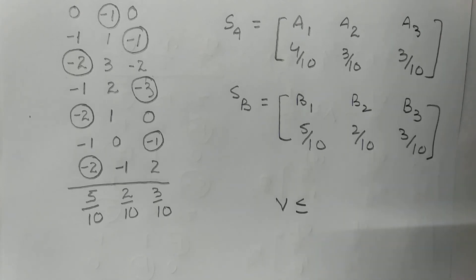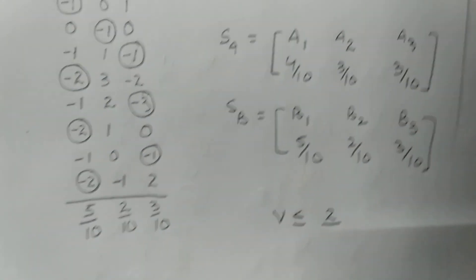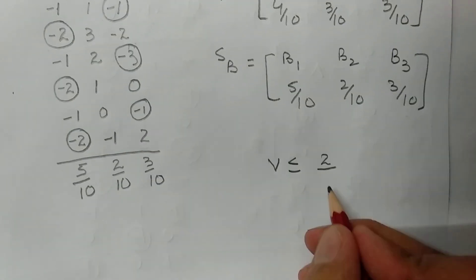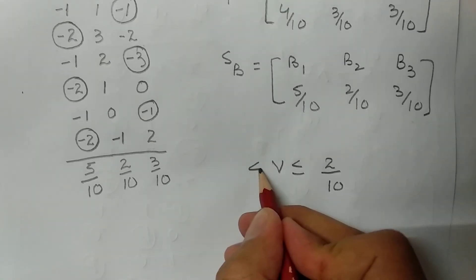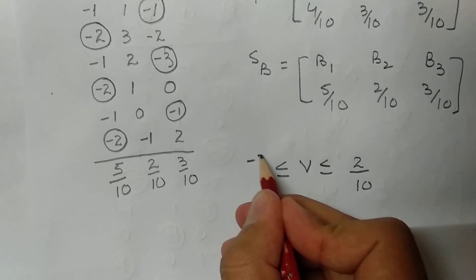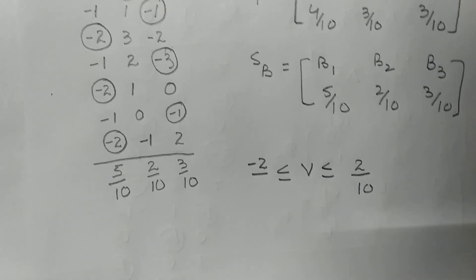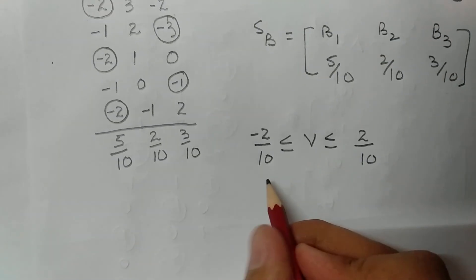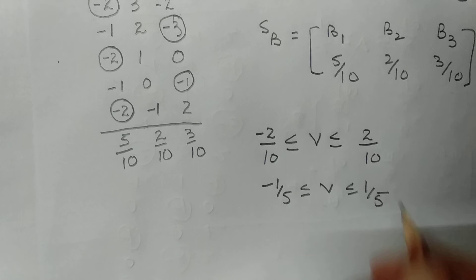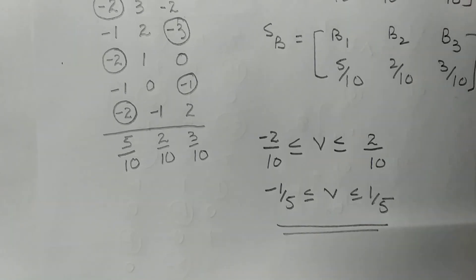The value of game v satisfies: v ≤ (highest element in last column) / (iterations) = 2/10 = 1/5, and v ≥ (lowest element in last row) / (iterations) = −2/10 = −1/5. Therefore: −1/5 ≤ v ≤ 1/5. Hence the approximate value of the game is between minus one-fifth and one-fifth. This is the required solution.